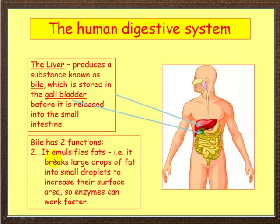Secondly, it helps to break down fats — emulsify means to break down fats. It breaks down large amounts of fat into small droplets to increase their surface area so enzymes can work faster. Emulsification is where bile breaks down fats into smaller droplets so enzymes can work more effectively.